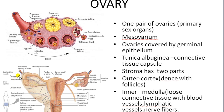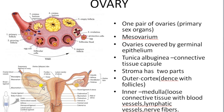Mesometrium, mesovarium, and mesosalpinx together are known as the broad ligament. In the examination, you may be asked what are the ligaments which attach the ovary, fallopian tubule, and uterus. Another ligament which attaches the ovary to the uterus is the ovarian ligament.